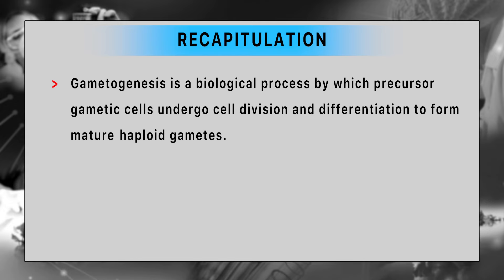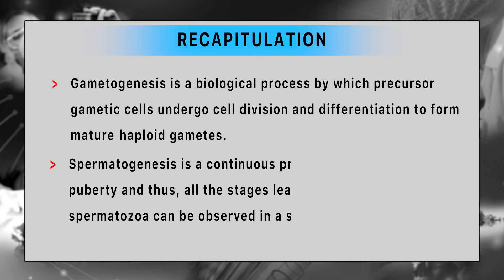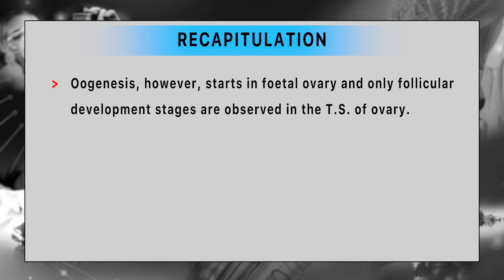Gametogenesis is a biological process by which precursor gametic cells undergo cell division and differentiation to form mature haploid gametes. Spermatogenesis is a continuous process after attainment of puberty, and thus all the stages leading to development of spermatozoa can be observed in a single seminiferous tubule. Oogenesis, however, starts in a fetal ovary, and only follicular development stages are observed in the transverse section of the ovary.